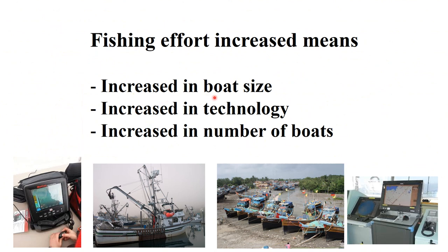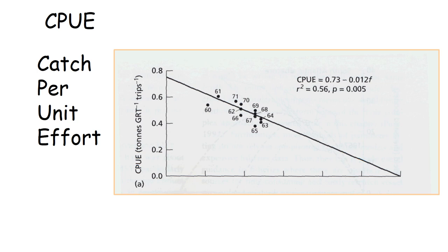Increasing fishing effort means we are increasing the number of boats and their size. Earlier there were small boats; now there are huge mechanized boats with lots of tools. Fishermen and boats are using GPS, radar, and lots of technology, and the number of boats has increased — you can see lots of fishing boats operating at any harbor nowadays. You are increasing effort but catch is not increasing, meaning there is a decline in catch per unit effort — a pretty bad sign that the stock is declining.